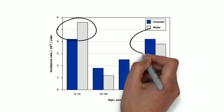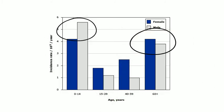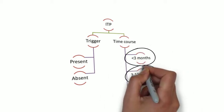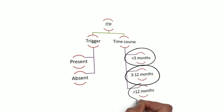It has a biphasic age distribution. Based on the duration of disease, it can be classified as newly diagnosed ITP, persistent ITP, and chronic ITP.